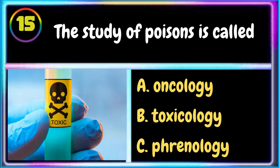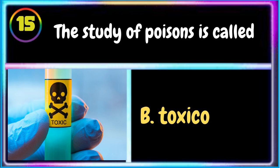15. The study of poisons is called: A. Oncology B. Toxicology C. Phrenology. B. Toxicology is the correct answer.